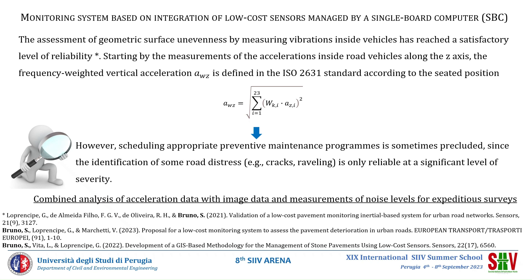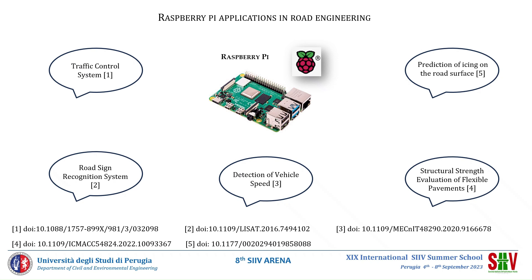This study aims to overcome the weakness of vibration-based systems and proposes a novel system that can integrate acceleration data with image data and noise level measurements. We know from previous studies how to process data, but we need a system able to manage data from various sensors and then integrate and analyze the different data on the pavement condition of urban road networks. The Raspberry Pi technology has become popular due to its benefits — affordability, versatility, and ease of operation — and we use it for our own purposes.